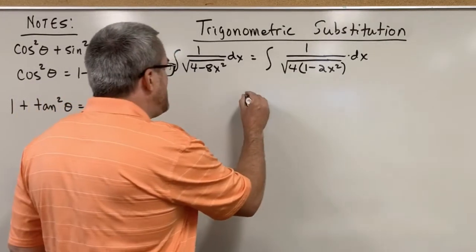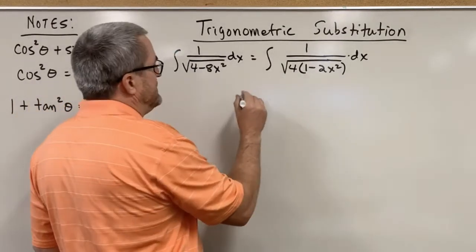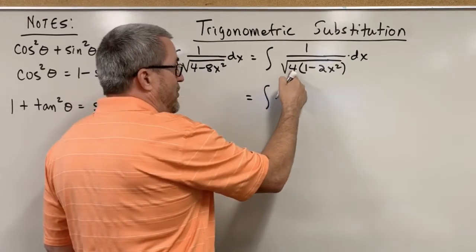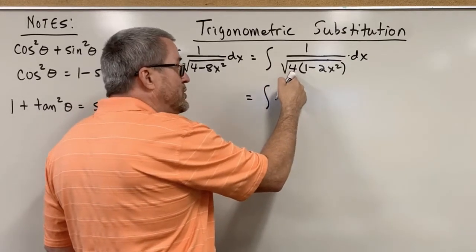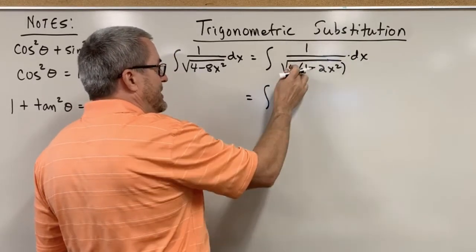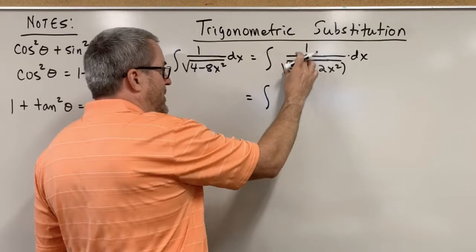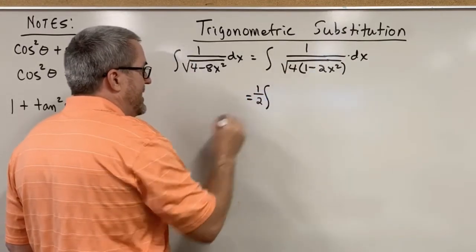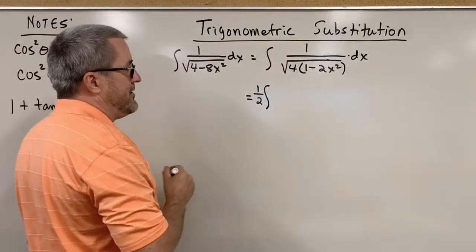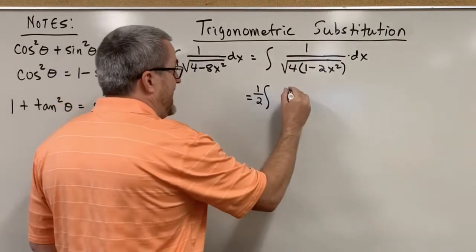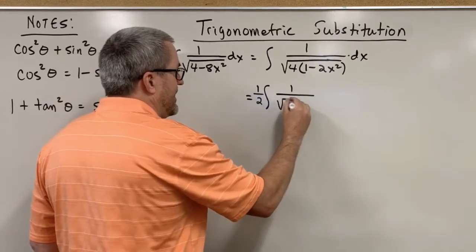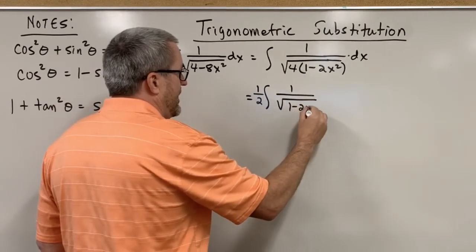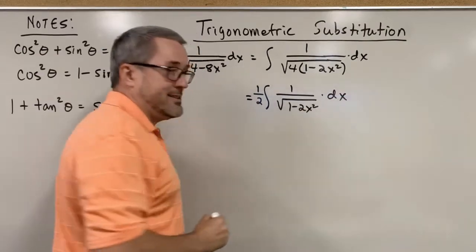Now let's continue making some moves to simplify this. The square root of 4 is 2, so if I simplify this it's really a factor of 1 half, and that factor of 1 half can be brought out front of the integral. So what I now have is this.